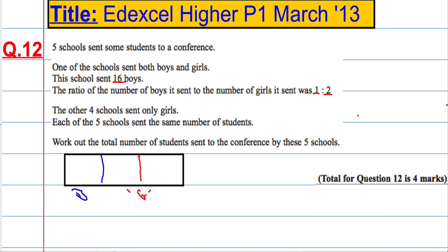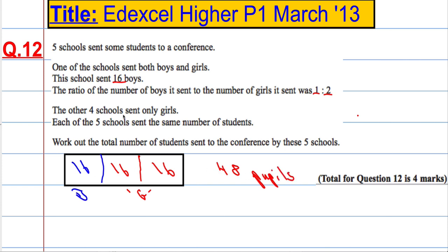This school sent 16 boys. With ratio, each part must be equal. So that must be 16, that must be 16, and that must be 16, which means this school sent in total 16 plus 16 plus 16 — 48 pupils in total. So 48 pupils went from this school.